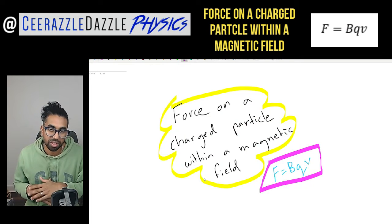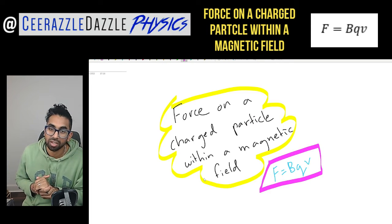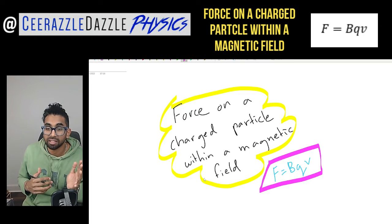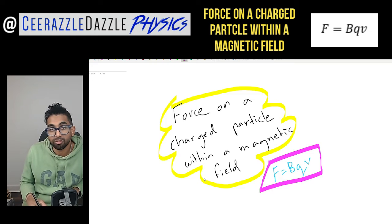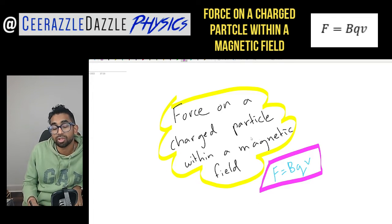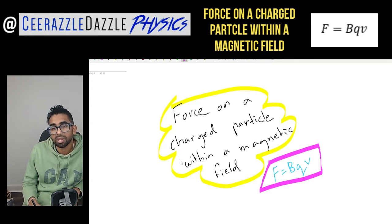Hey everyone, welcome to another session of Surrounds Will Dazzle Physics. In today's session, we're talking about the force on a charged particle within a magnetic field, and we're going to be looking at the formula F is equal to BQV. Make sure you hit the like and subscribe button to keep my channel going and keep my content as free as possible.